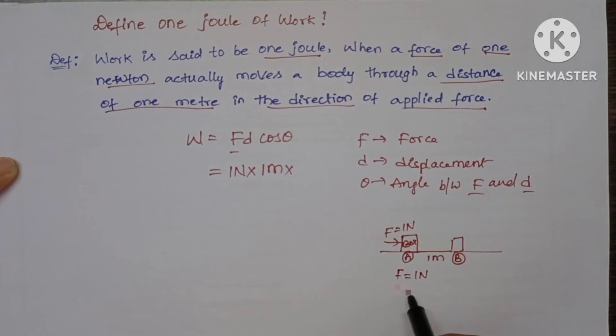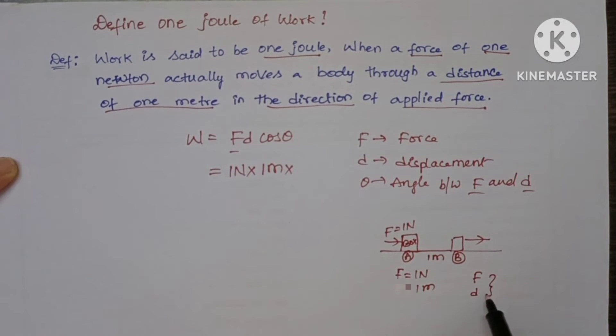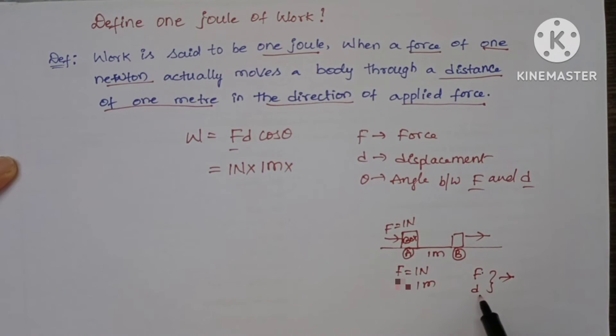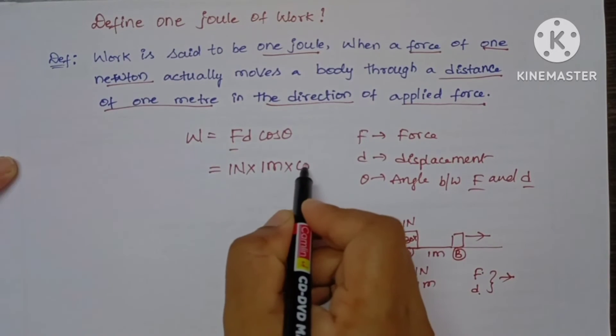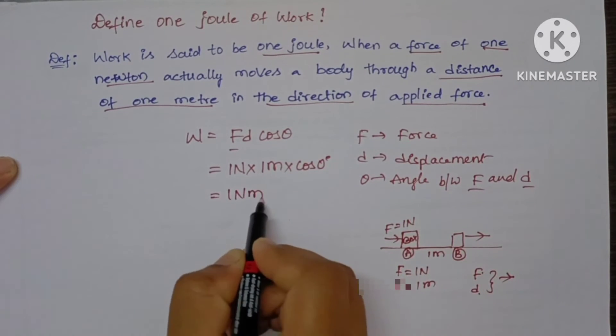In the direction of the applied force, that means force and displacement both are in the same direction. So angle between force and displacement is 0, so here it is cos 0 degree. We know that cos 0 is 1.